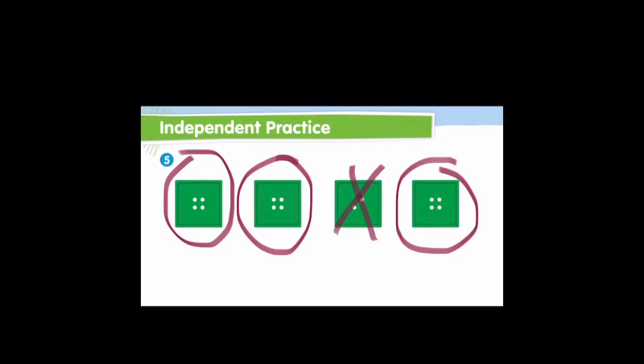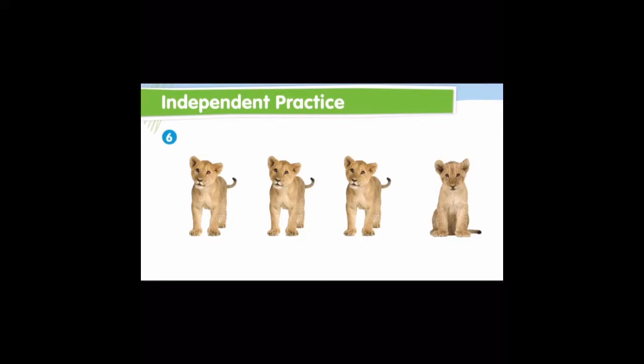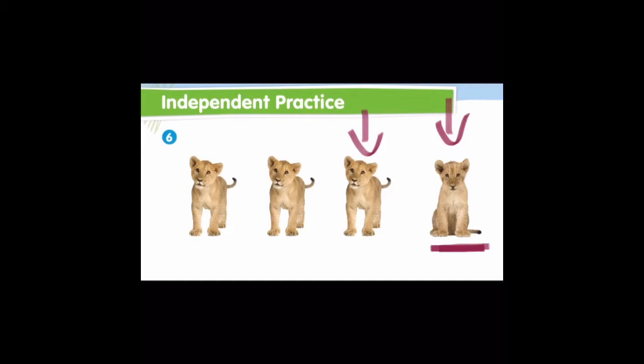Now take a look at this row. Which one of these is different? Good job — this lion is different than the others. Why is it different? This lion is different because it is sitting down, and these lions are all alike because they are standing. So let's circle them and we are going to put an X on this one.